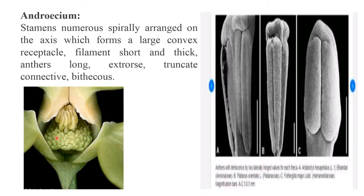Androecium: stamens are numerous, spirally arranged on the axis which forms a large convex receptacle. Filament short and thick, anther long, extrorse, with an enlarged connective. Bithecous.